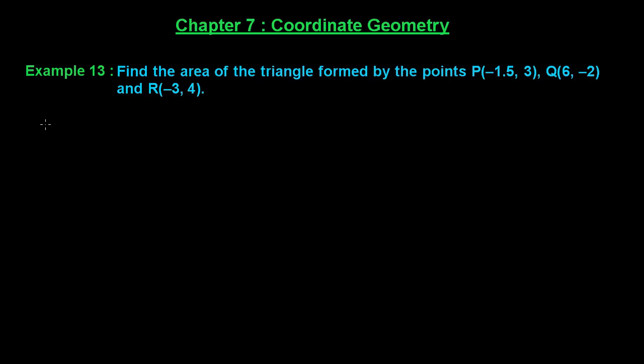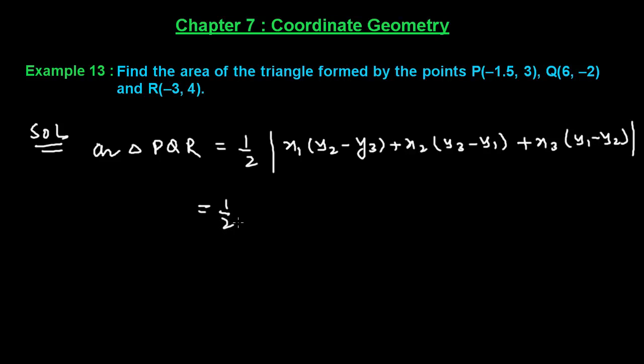This is the same as example number 11 and 12, so let us solve it. Here we shall apply the formula of area of the triangle. Therefore, the area of triangle PQR will be equal to 1/2 times the modulus of x1(y2 - y3) + x2(y3 - y1) + x3(y1 - y2).